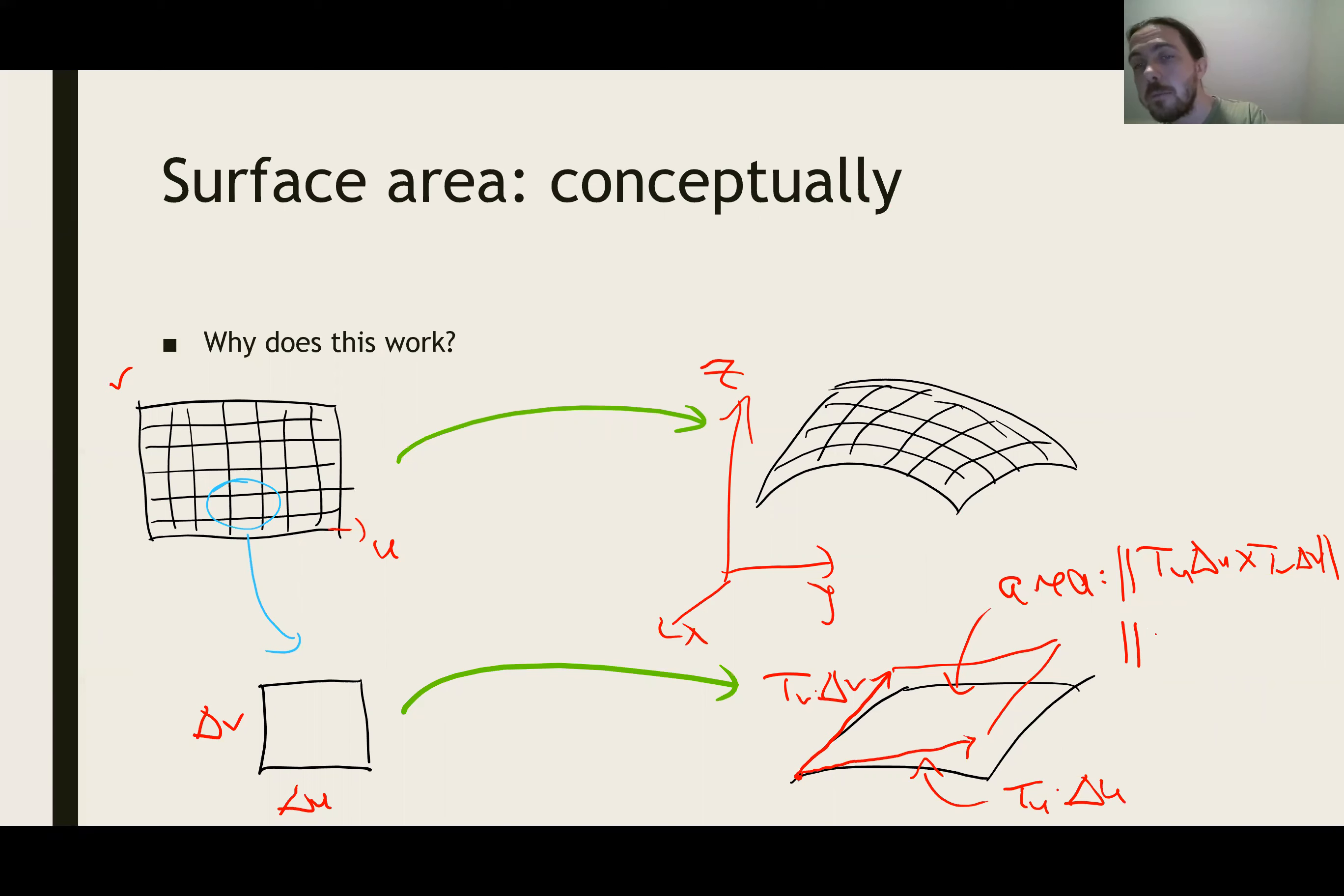But changing those two vectors by lengths, by rescaling them by delta u and delta v, just kind of pulls out of the cross product. And so the area is approximated basically by the cross product of those two tangent vectors times the length and the height. And so then when I take a limit and let delta u and delta v get smaller and smaller, this gets closer and closer to actually calculating the surface area, and those turn into du and dv inside the double integral. So that's kind of why this formula works and where it comes from.